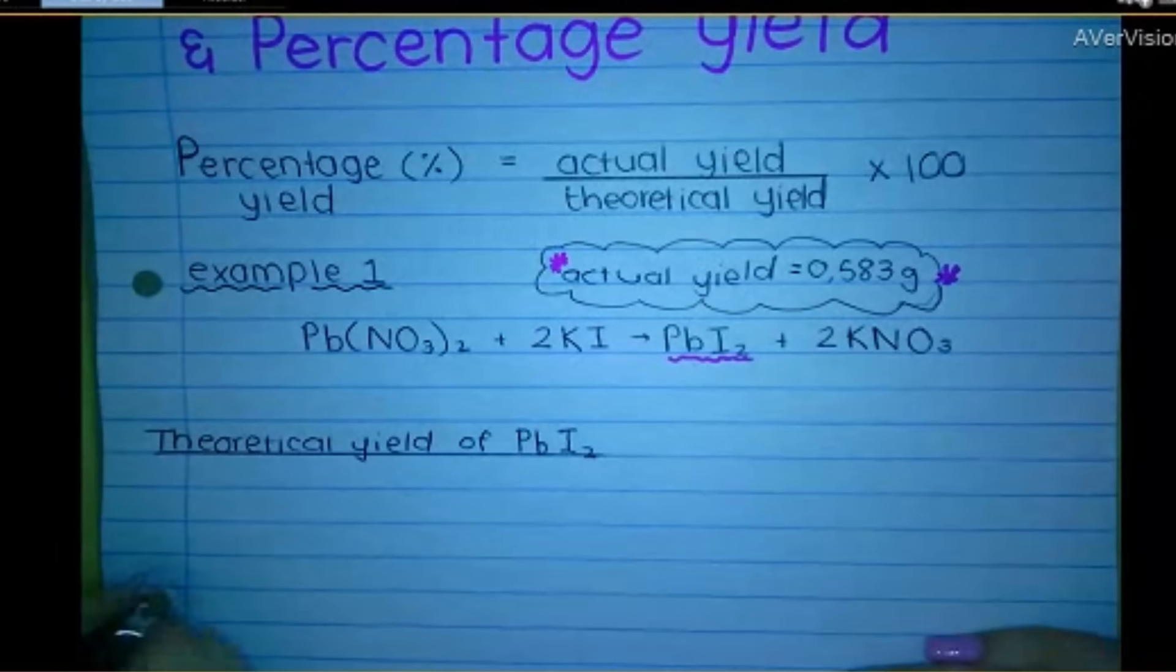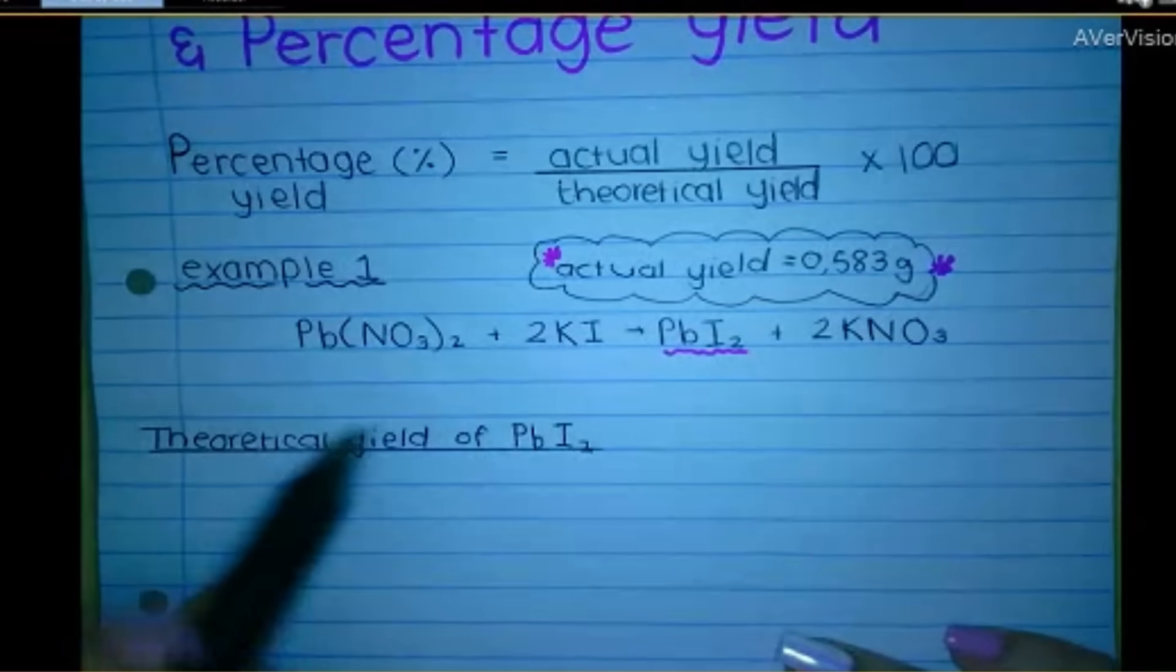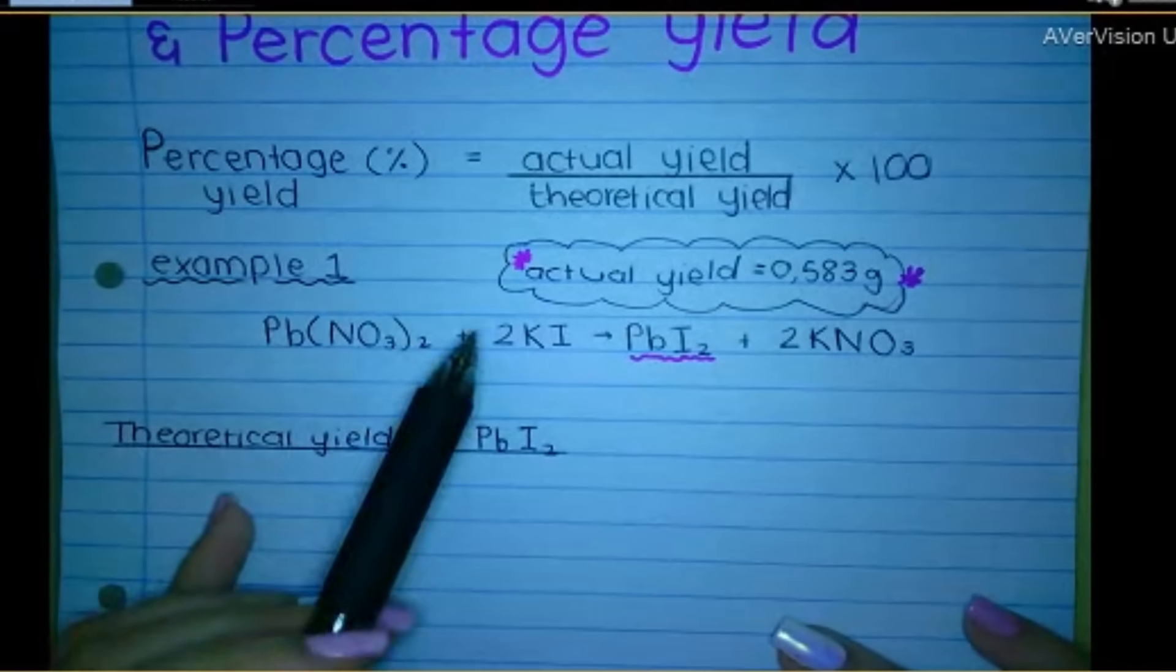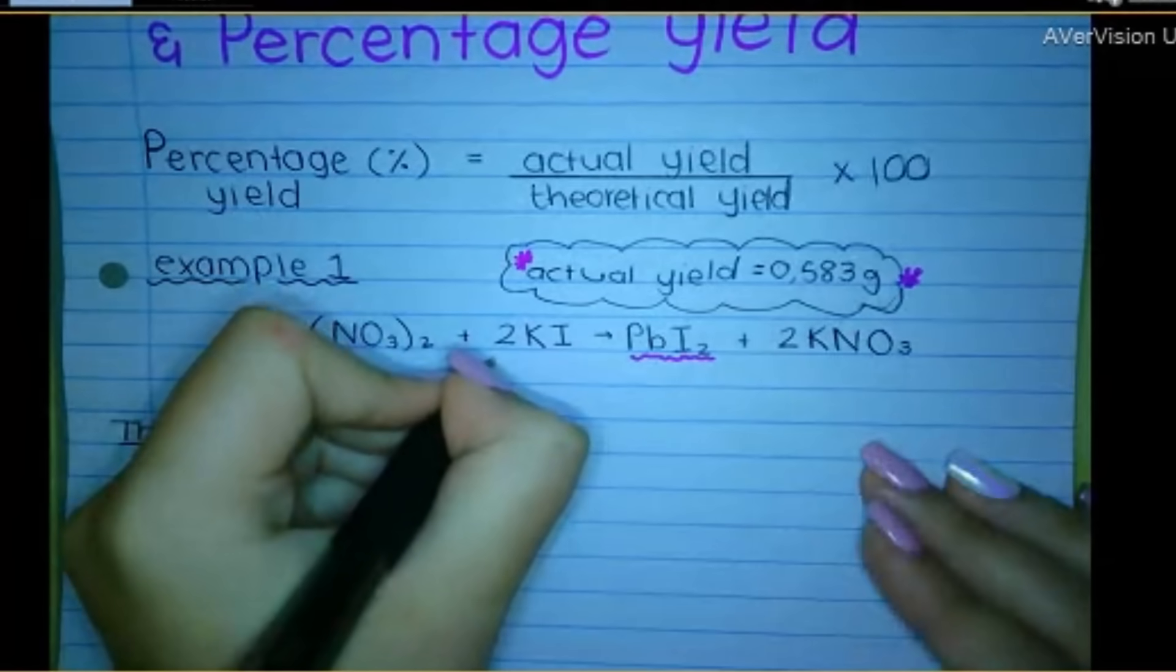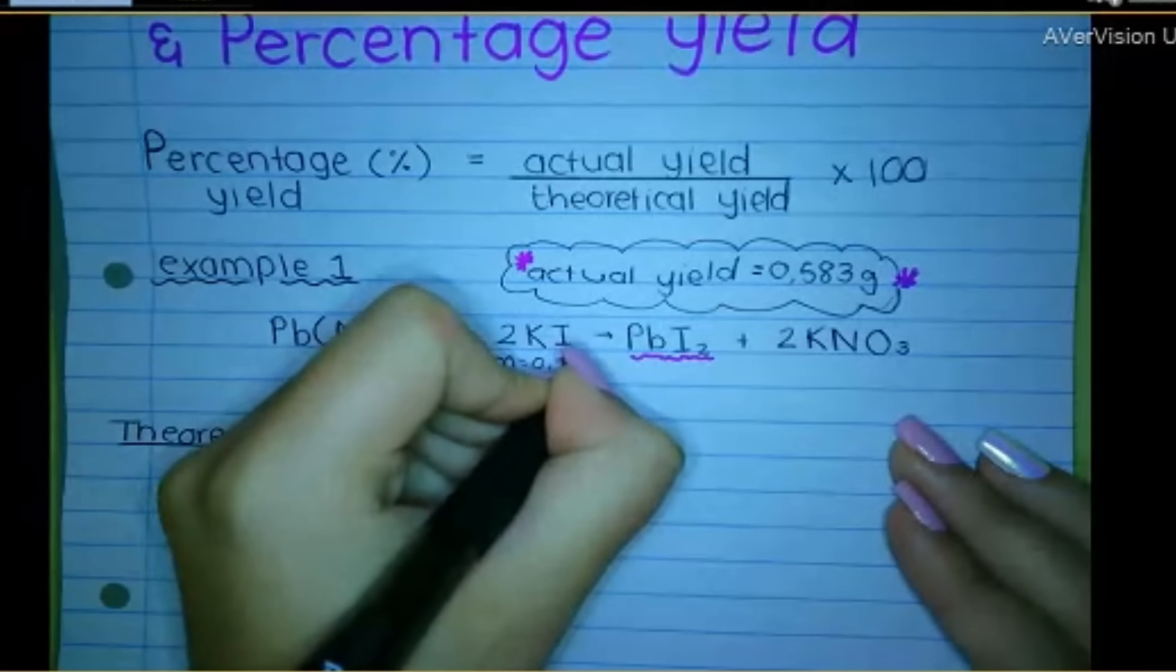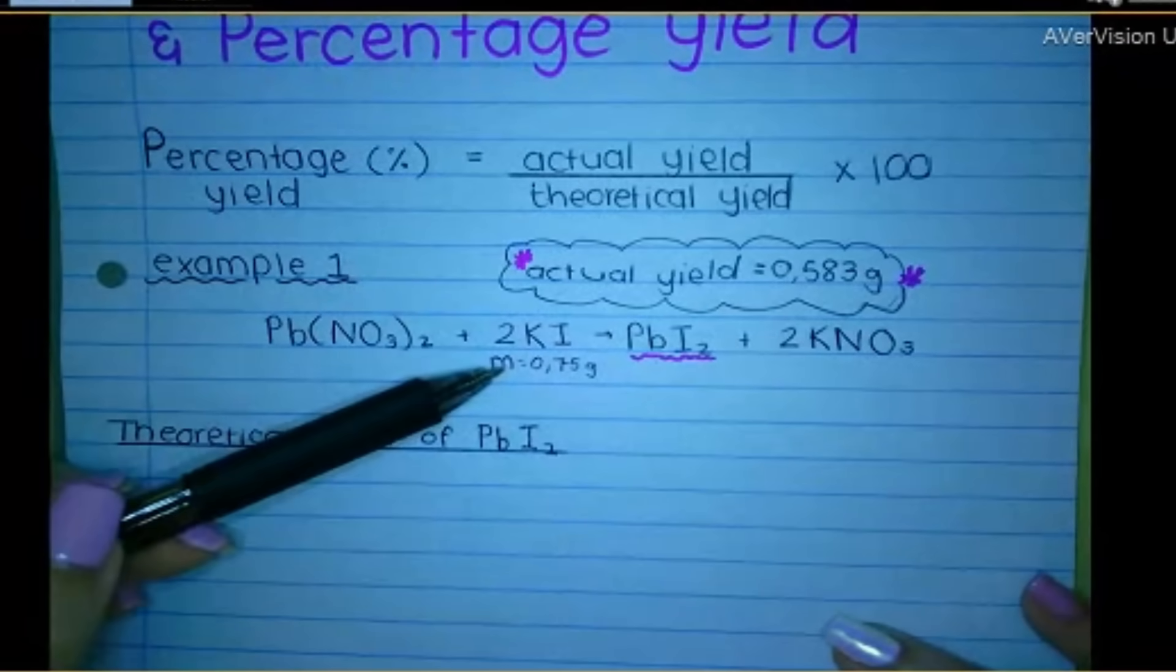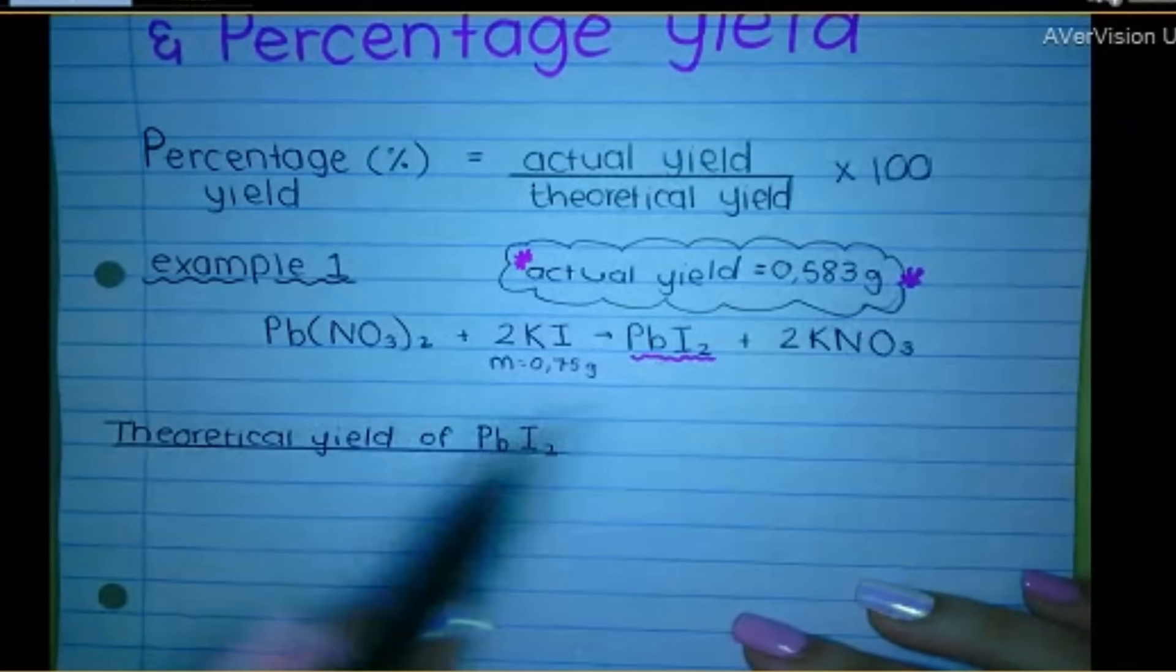Okay, so let's see again what the question gives me. It says an excess of lead nitrate reacts with 0.75 grams of potassium iodide. So this mass is 0.75 grams. So we know that this information is given. I need to work out the theoretical yield of this.